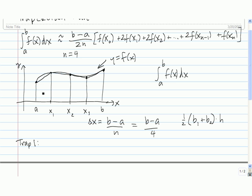For our first trapezoid, it's oriented a little differently than we're used to. The first base is f of a and the second base is f of x sub 1. So we have one half times f of a plus f of x sub 1, times the height of the trapezoid, which runs in the horizontal direction and equals delta x.